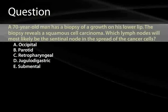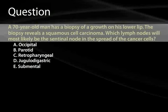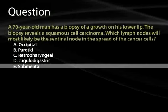Let's try another question. A 70-year-old man has a biopsy of a growth on his lower lip. The biopsy reveals squamous cell carcinoma. Which lymph node will most likely be the sentinel node in the spread of this aggressive cancer? Since the structure is anterior and on the lip, it will drain by gravity into the closest available node. There are two main divisions of nodes, and if you're near the chin, the answer would be the submental node.